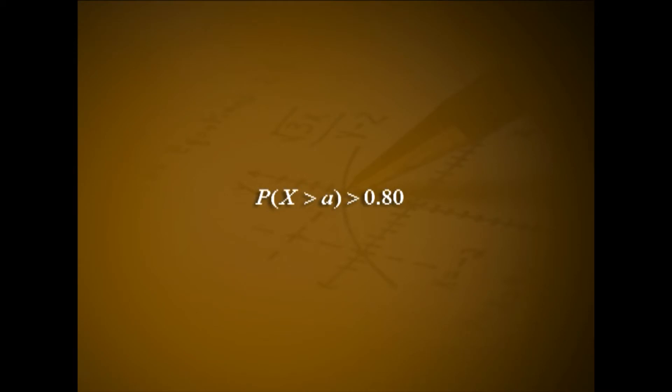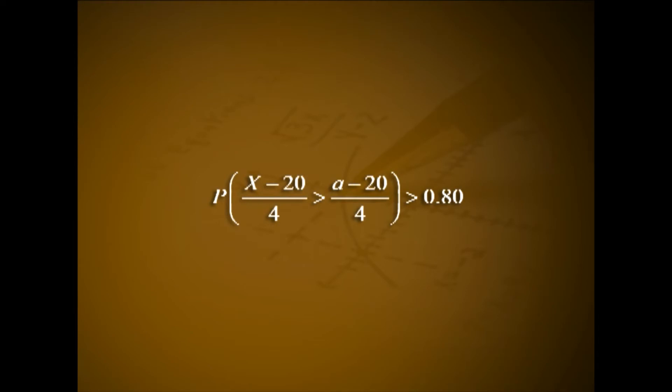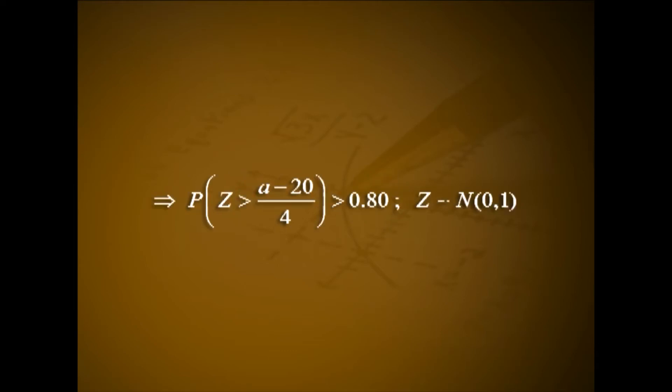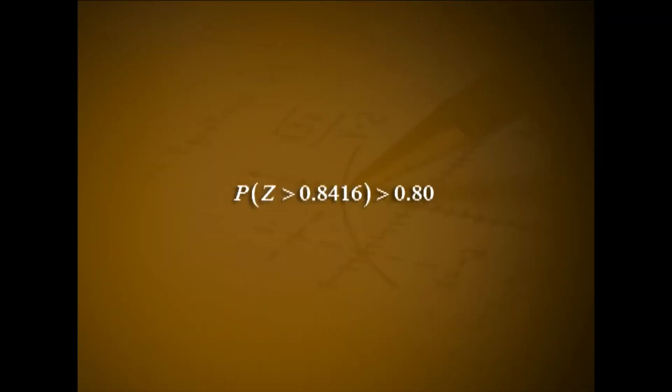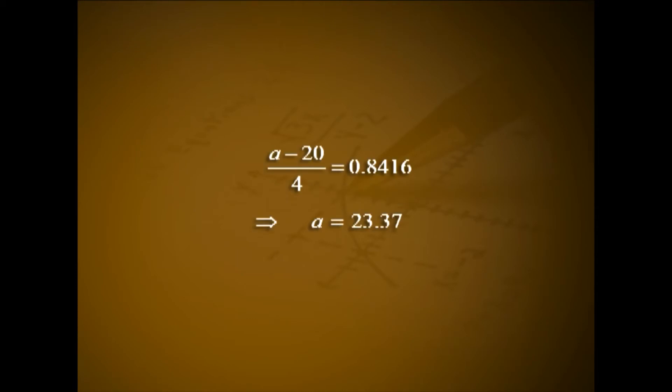By which duration will the project have more than 80% probability of completion? Let a months be that duration, so P(x > a) > 0.80. P((x-20)/4 > (a-20)/4) > 0.80. From the standard normal table, P(z > -0.8416) = 0.80, giving (a-20)/4 = -0.8416, so a = 20 - 4 × 0.8416 = 16.63. That is, by a duration of more than 16.63 months the probability of project completion is more than 80%.